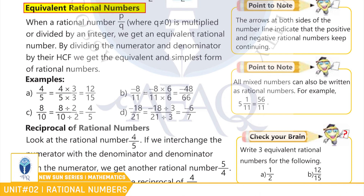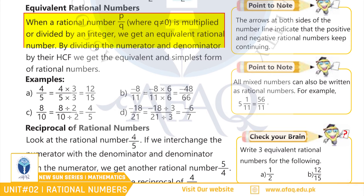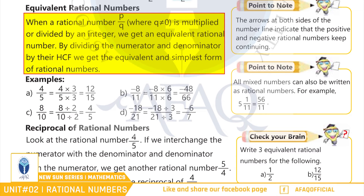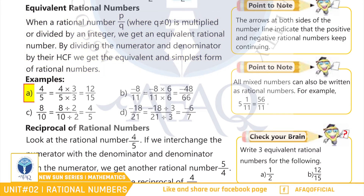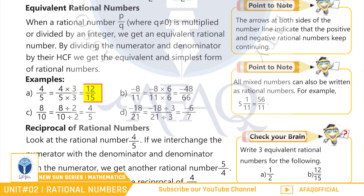Equivalent rational numbers. جب ہم ایک rational number P by Q جبکہ Q is not equal to zero کو ایک نمبر یا integer کے ساتھ multiply یا divide کریں تو ہمیں اس rational number کا ایک equivalent rational number ملتا ہے. مثال کے طور پر: 4 by 5 equals 4 multiplied by 3, by 5 multiplied by 3, equals 12 by 15. تو اس طرح سے 12 by 15، 4 by 5 کا ایک equivalent rational number ہے.